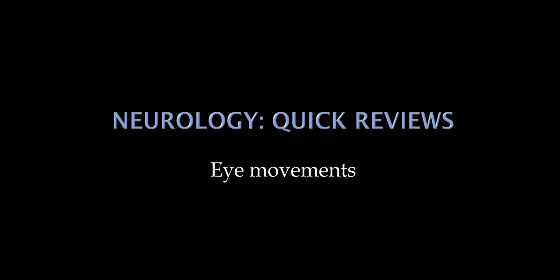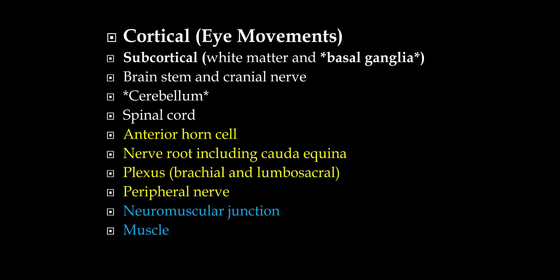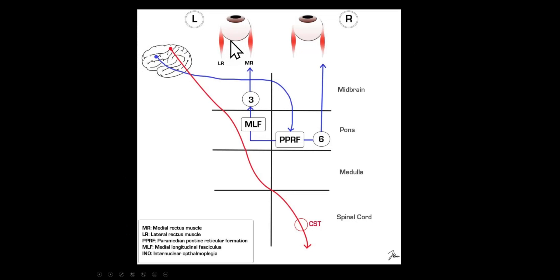This will be a very short lecture on eye movements because we've covered a lot of this in previous lectures, but I mainly want to tie in the cerebral cortex and eye movements. So we're up to the cortical area now on our trip through the nervous system, and I want to emphasize mainly the frontal eye fields and eye movements, and we'll make a number of relevant, high-yield clinical applications of that.